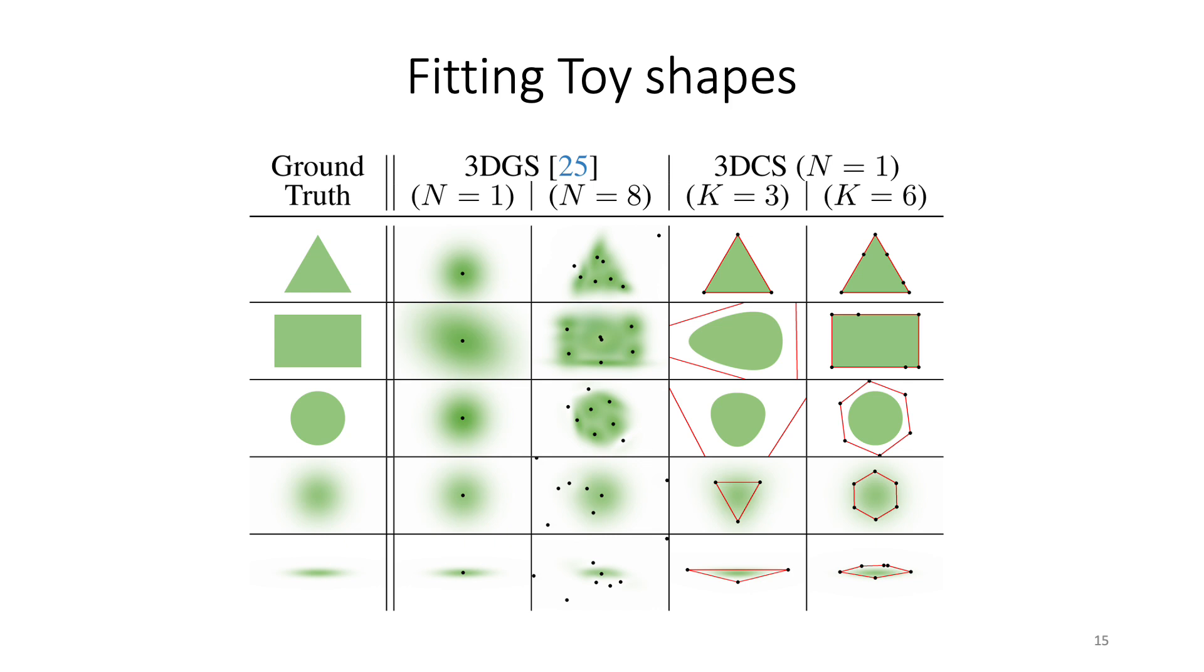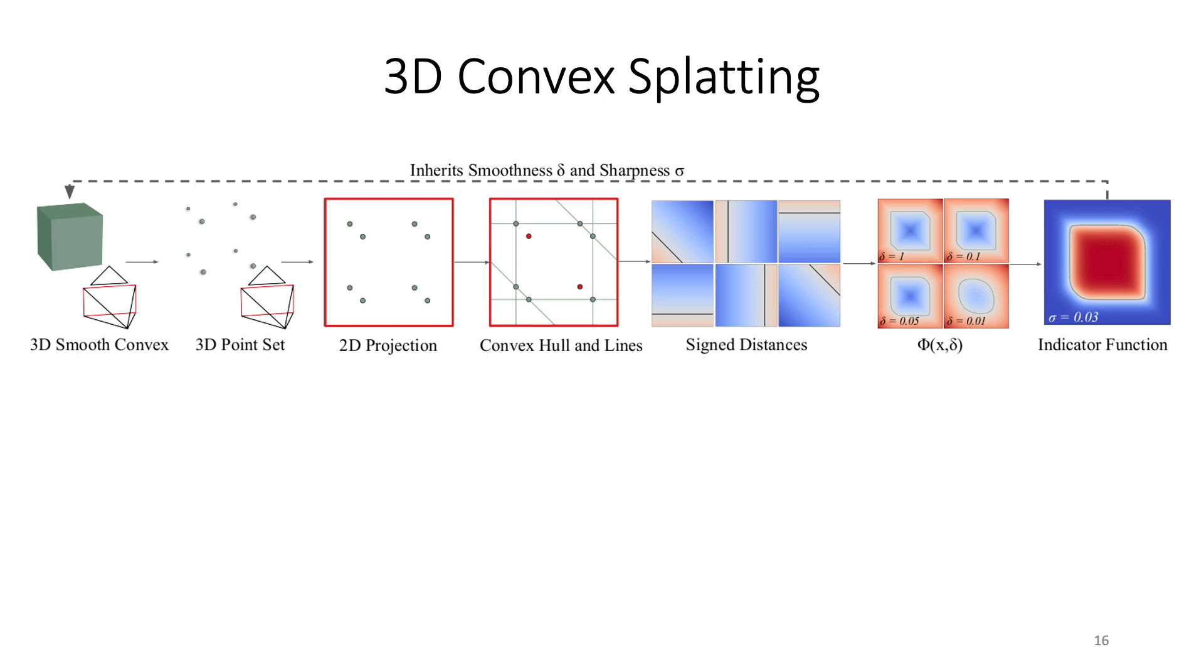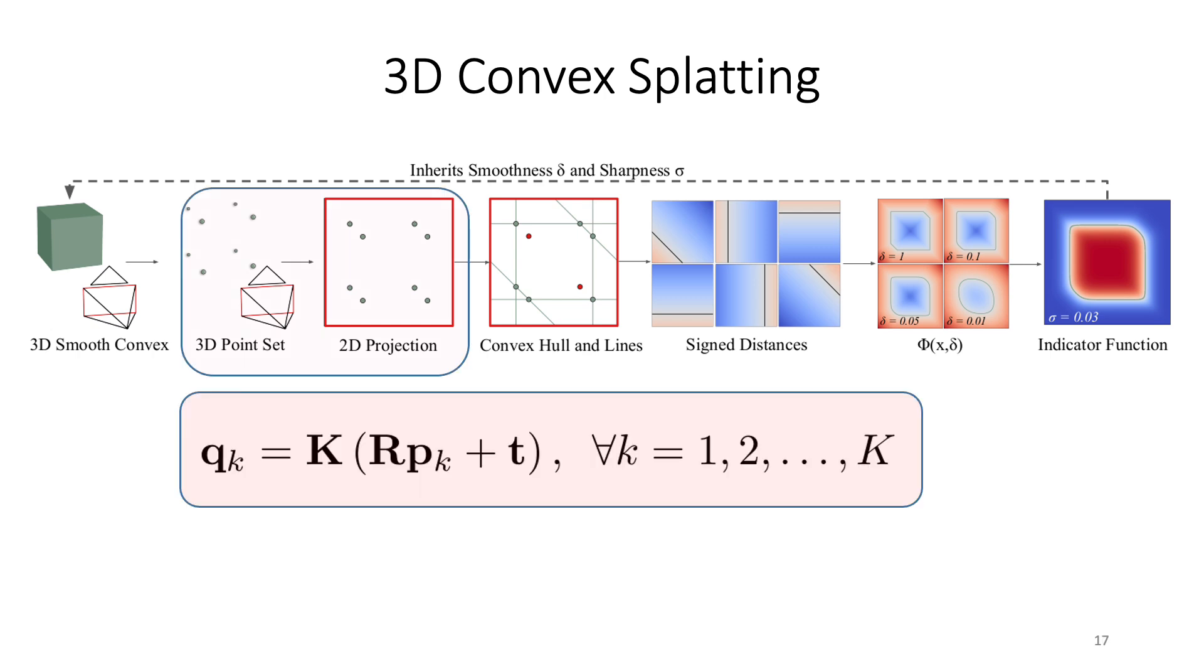Here N refers to the number of primitives used in the optimization, and K refers to the number of points per convex used in the smooth convexes. The 3D Convex Splatting pipeline consists of several modules. We start by projecting the edge points and boundary points of the 3D smooth convex on the 2D plane. So we have these K 2D points on the image plane. It's important to note that representing the 3D smooth convex with the K points instead of hyperplanes simplifies the projection into the 2D image plane.